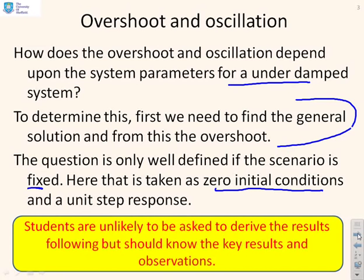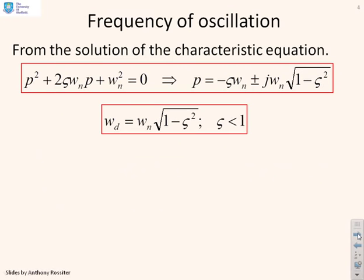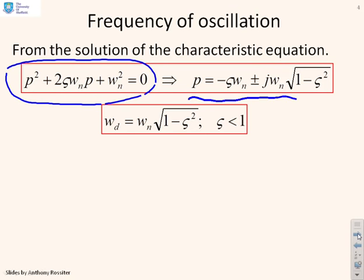Students are unlikely to be asked to derive these results in an exam, but it's worthwhile going through this because if you can do it, you've got the skills when you need them. The characteristic equation is summarised here, and the roots are given by p = −ζωn ± jωn√(1 − ζ²). The frequency of oscillation is therefore ωd = ωn√(1 − ζ²).